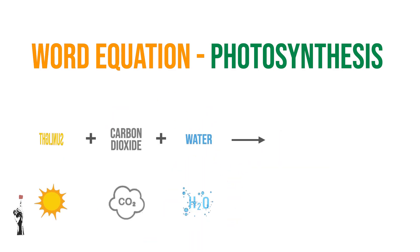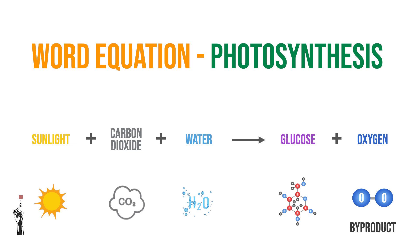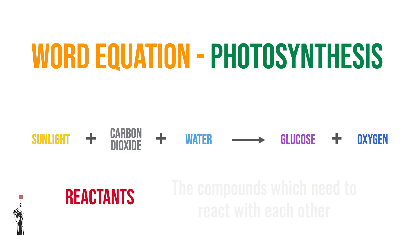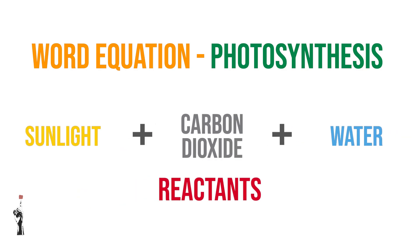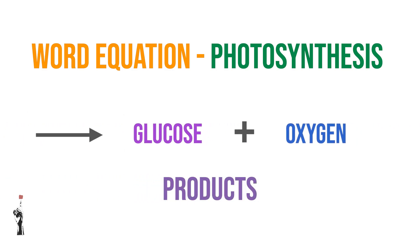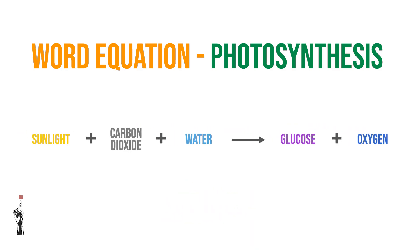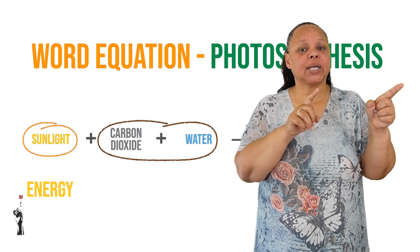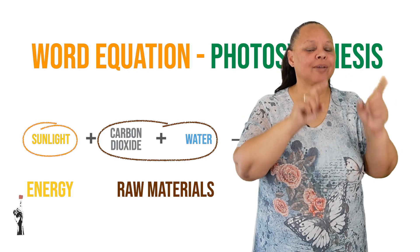So again, it is sunlight plus carbon dioxide plus water, with an arrow indicating the chemical reaction that takes place, to give us glucose plus oxygen, which is the byproduct of the whole process. In this equation, the reactants — meaning the compounds which need to react with each other — are sunlight, carbon dioxide, and water. Sunlight is the source of energy for this reaction, whereas carbon dioxide and water are the raw materials needed.